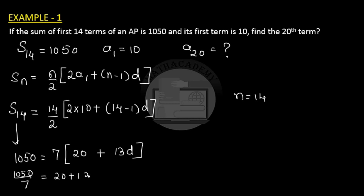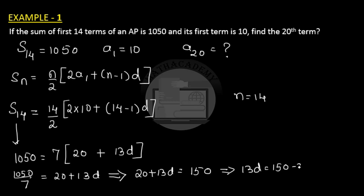Dividing 1050 by 7 gives 150, so 20 + 13D = 150. Therefore 13D = 150 − 20 = 130, which gives D = 10.